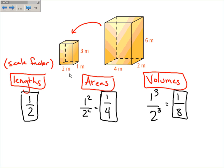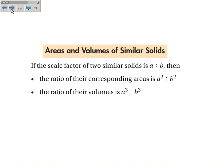The book says the exact same thing, slightly different. If the scale factor of two similar solids is A to B, the ratio of their corresponding areas is A squared to B squared. Areas are a two-dimensional thing. The ratio of their volumes, a three-dimensional thing, is A cubed to B cubed.